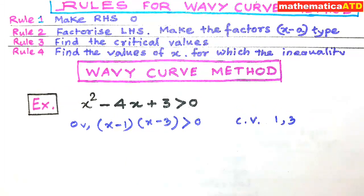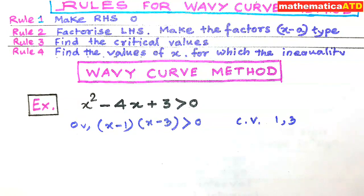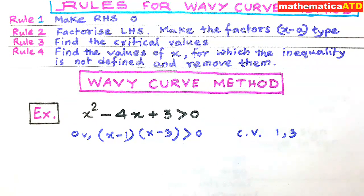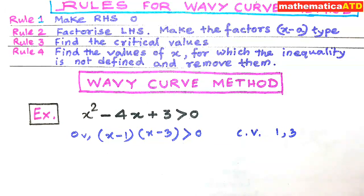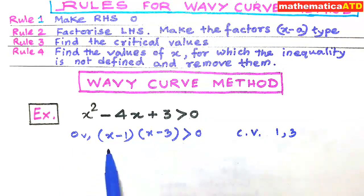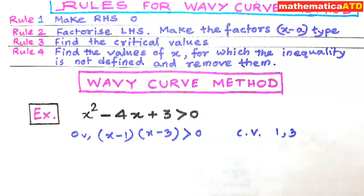Rule number four is: find the value of x for which the inequality is not defined and remove them. The factor in the denominator should be checked for which the inequality is not defined. This example is not of this type because there is no denominator — the denominator is only 1. The second type is: even-powered factors should be checked for which the inequality is not defined. Our second example will be of this form.